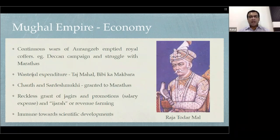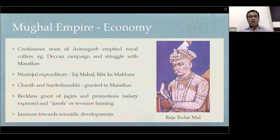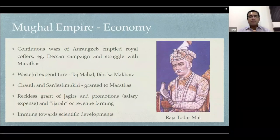During the reign of Aurangzeb itself the Mughal economy was crumbling. There was also wasteful expenditure in the form of the Taj Mahal and Bibi Ka Maqbara. And as if this was not enough, during the height of Maratha power, chauth and sardeshmukhi were granted to the Marathas, which became a loss for Mughal revenue. Chauth is one-fourth of the revenue from agriculture, and sardeshmukhi was a further 10 percent levy — a heavy drain on the revenues of the Mughal Empire.